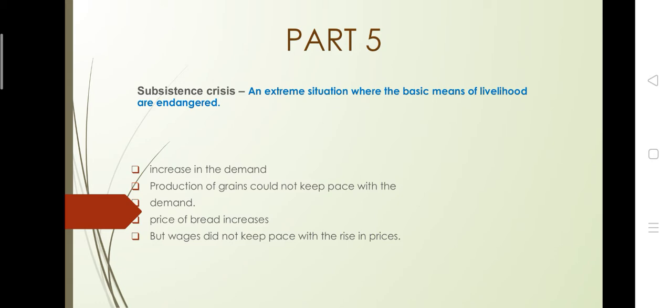There are various key points which help you understand this topic very easily. First is increase in demand. When there is an increase in demand, two things will happen: production will rise, and prices will also rise. The production of grains could not keep pace with the demand. The demand increases because the population is increasing, so the price of bread — the staple food — will increase.